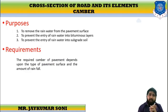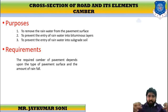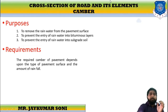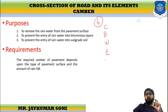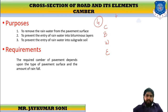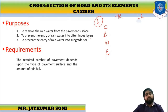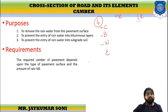Let us discuss about the requirements of camber. The required camber of the pavement completely depends on the type of pavement surface and the amount of rainfall. There are four types of camber represented as C, B, W and E — a shortcut key to make it easy to understand. There are two rainfall situations: heavy rainfall or lower rainfall. C stands for concrete, B stands for bituminous, W stands for water-bound macadam surface, and E stands for earthen road.